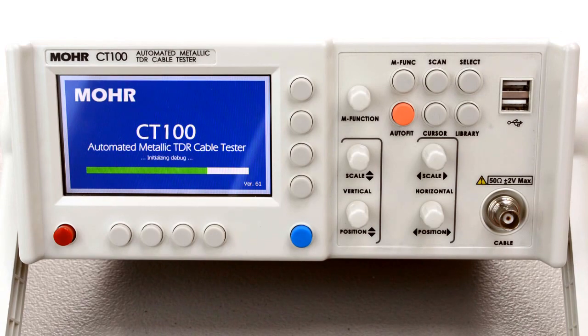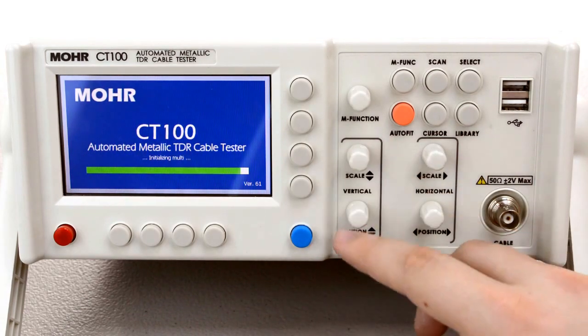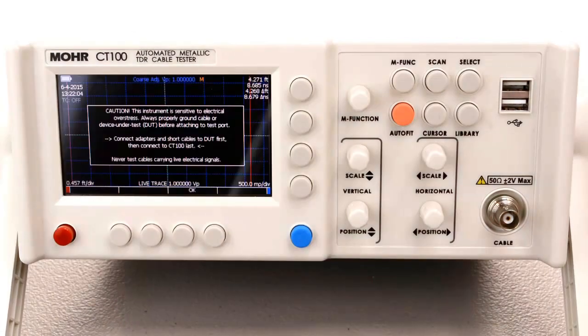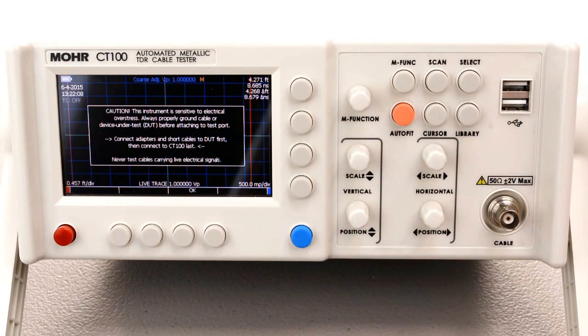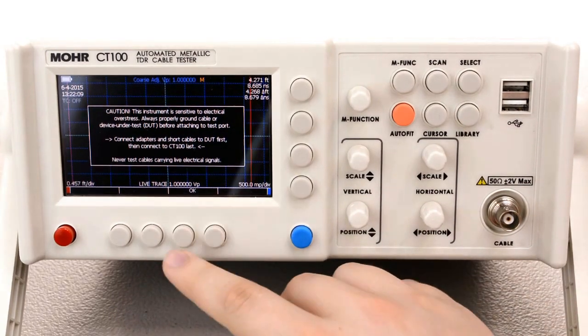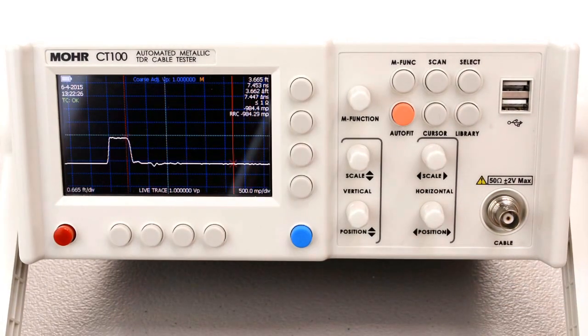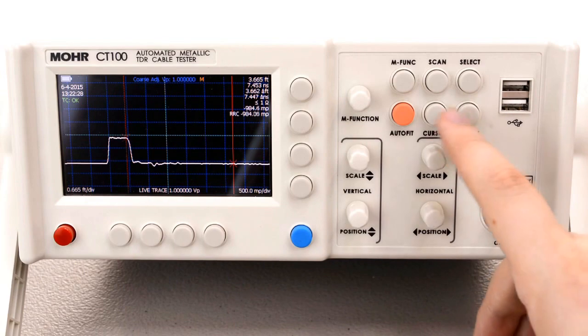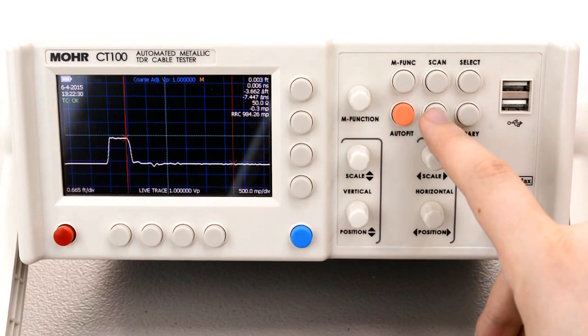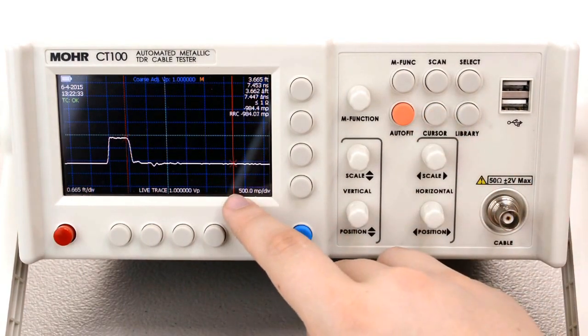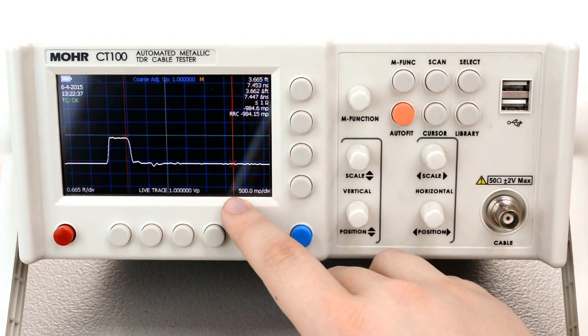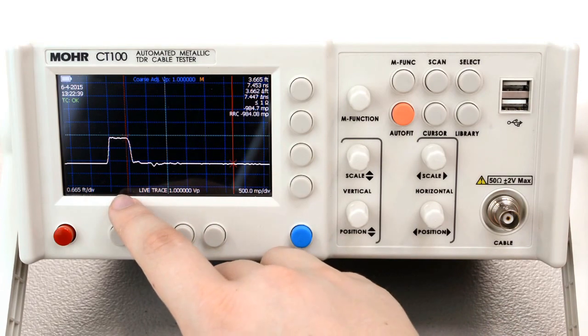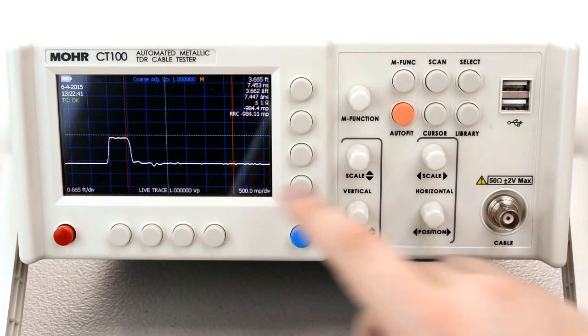Now the first thing we're going to go over are these four buttons here and this one. These are the cursor scaling and position knobs. The first one we're going to look at is the cursor button. This allows you to change cursors. There's two cursors on this machine. One is indicated by a solid red line as the active cursor. One is indicated by a dashed red line as an inactive cursor.